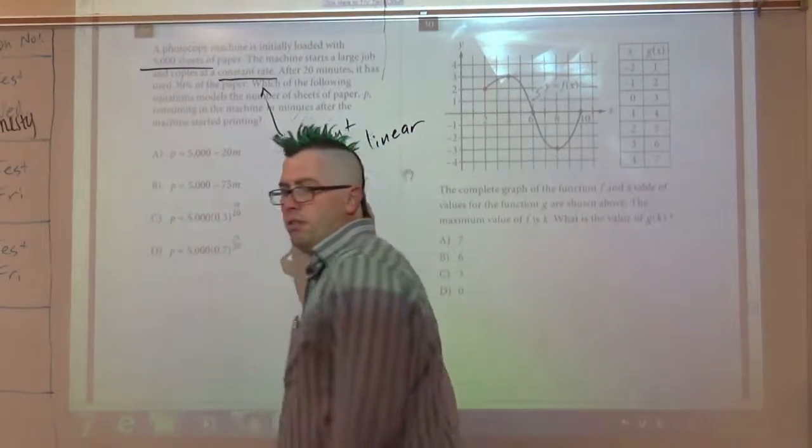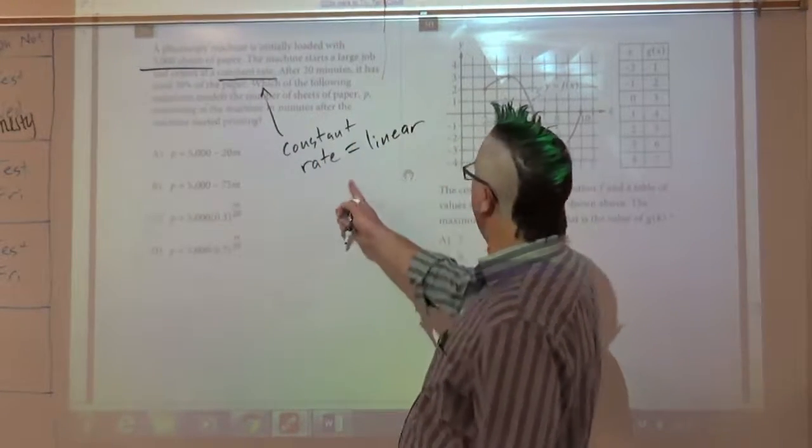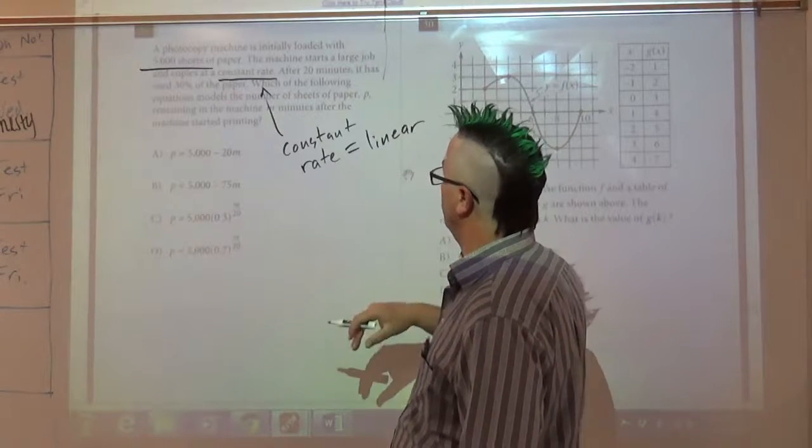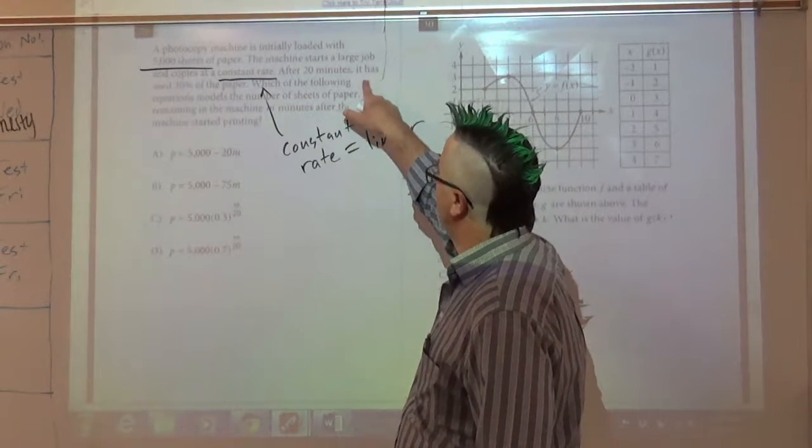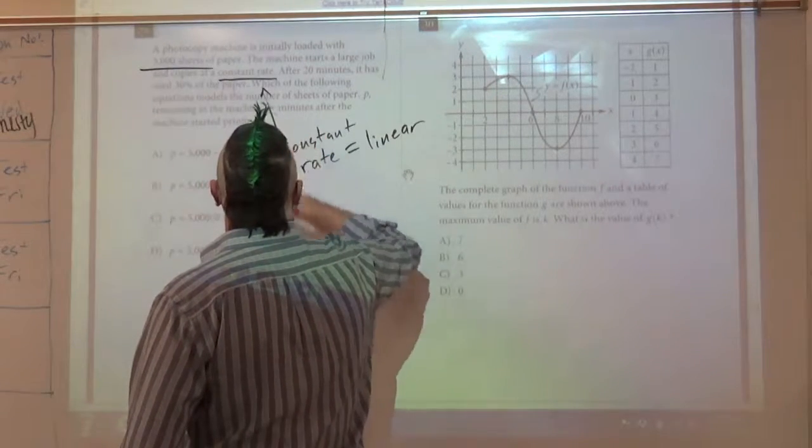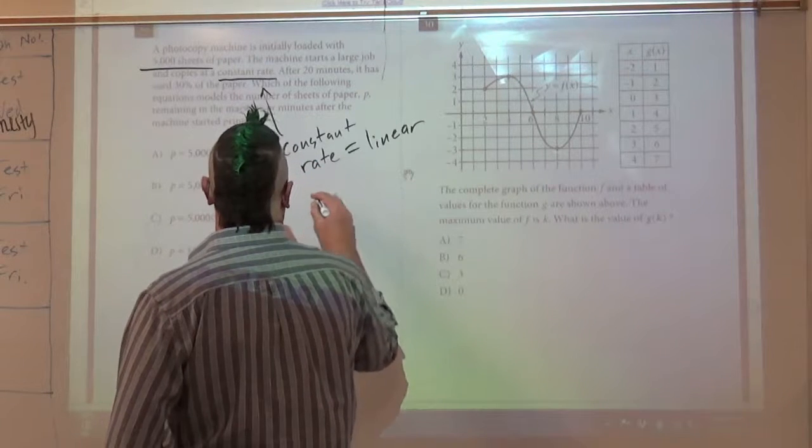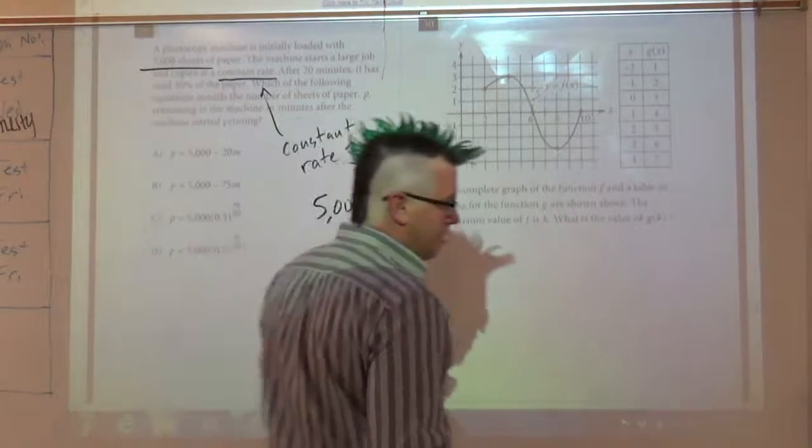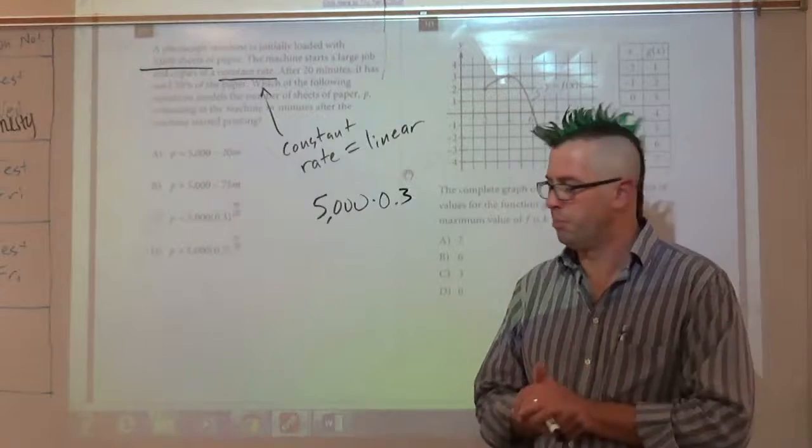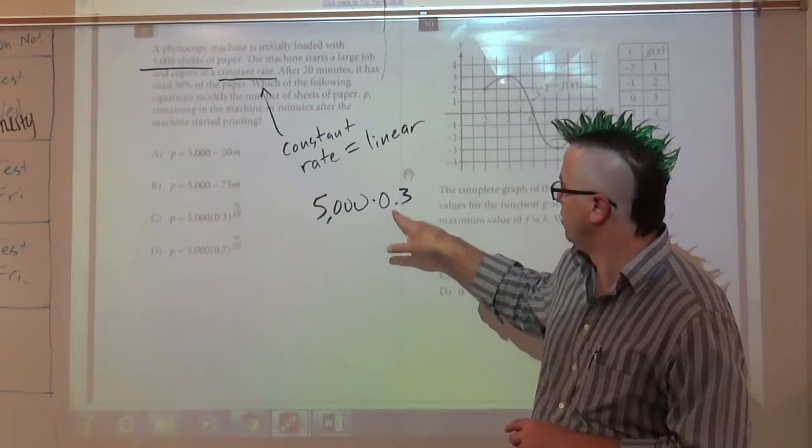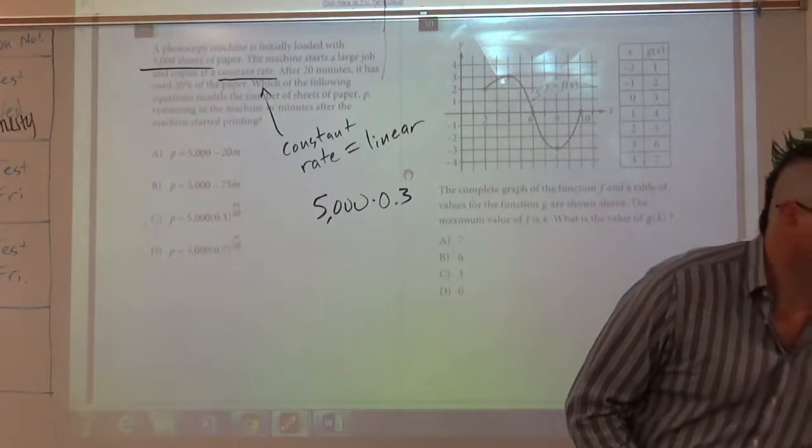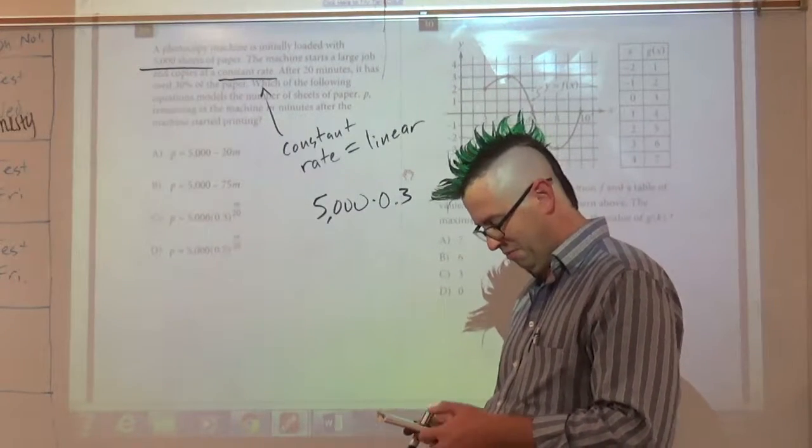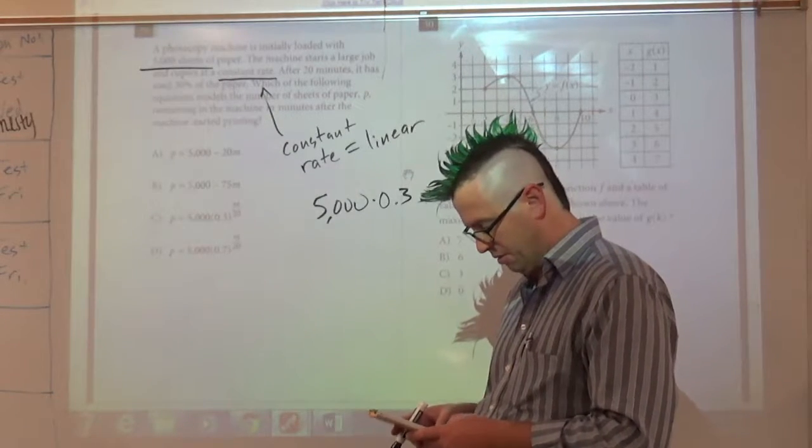If the rate is changing, then you need something other than a line. But constant, that's constant. So 20 minutes, it used 30% of the paper. 30%... before you can do anything with a percent, you have to make it a decimal. 5,000 times 0.3. I know, using a calculator, but we get to use one in this section, so whatever. Alright, so this gives me 1500. Now, that's after 20 minutes.